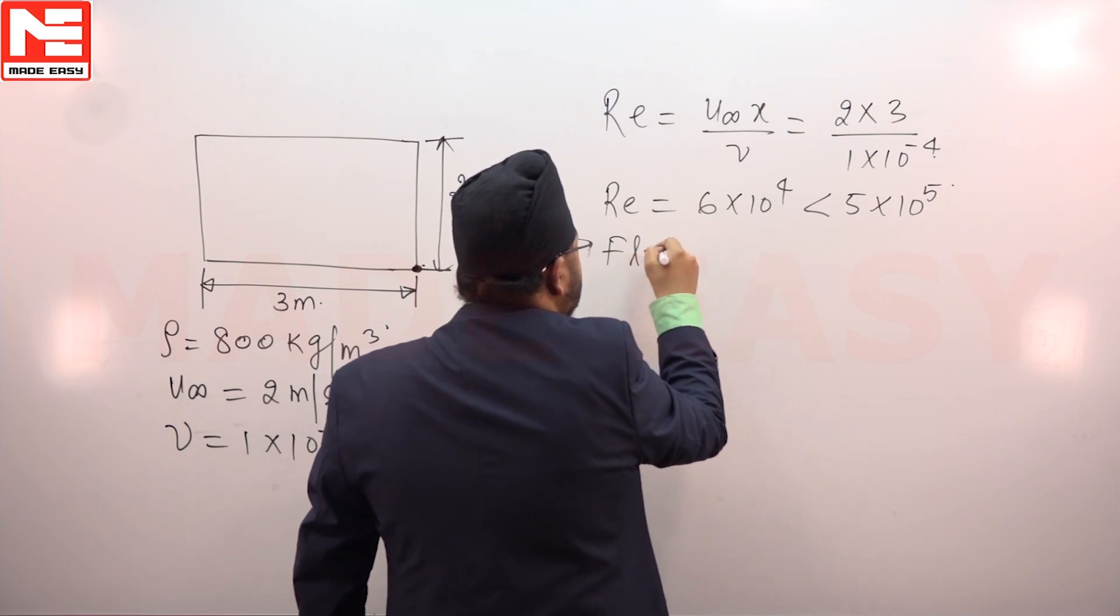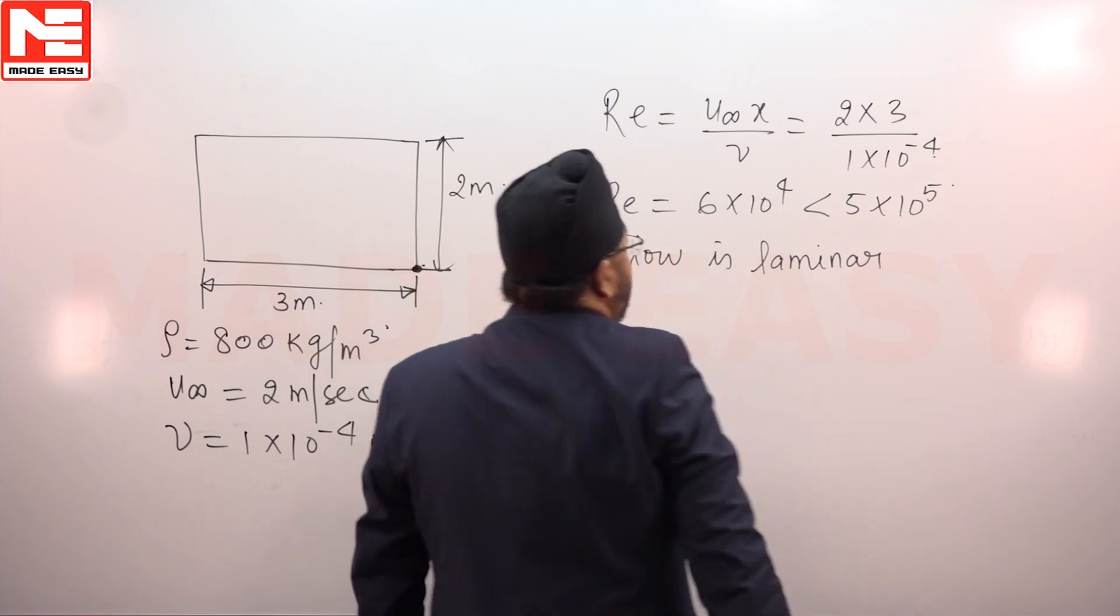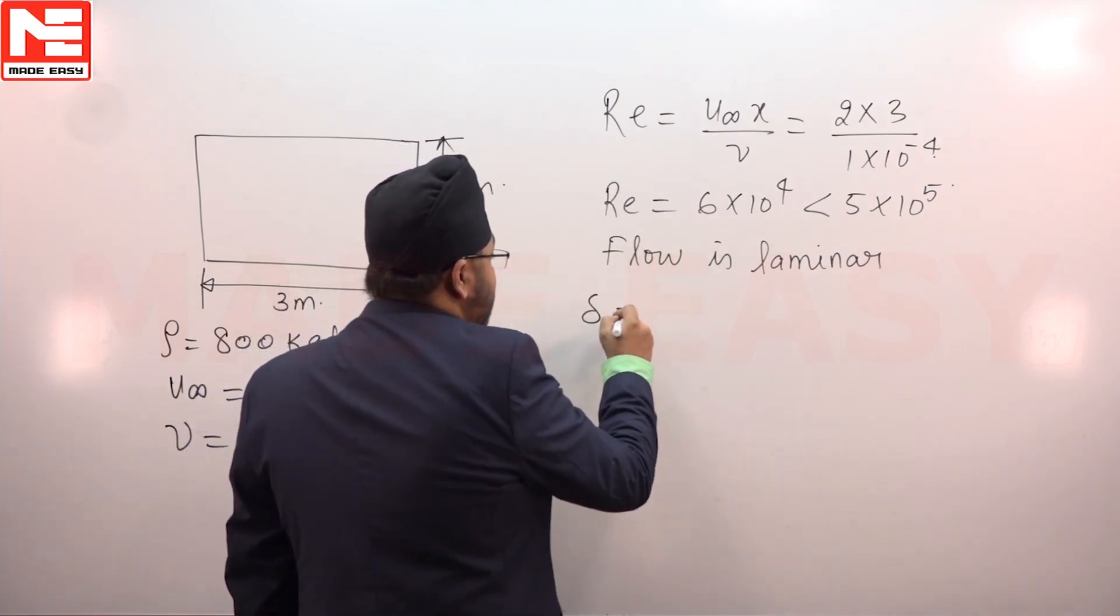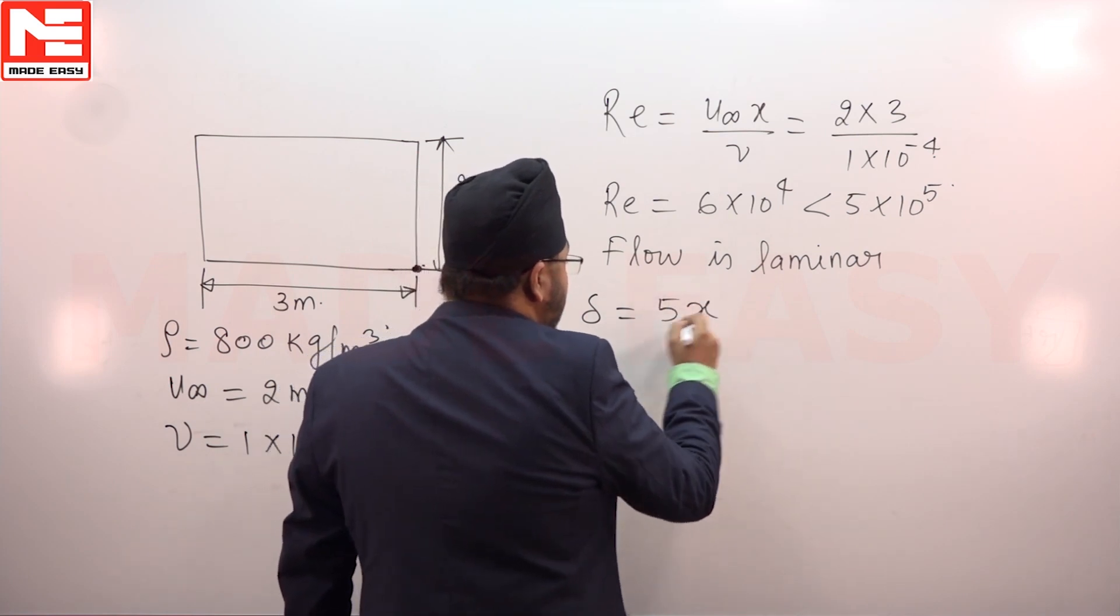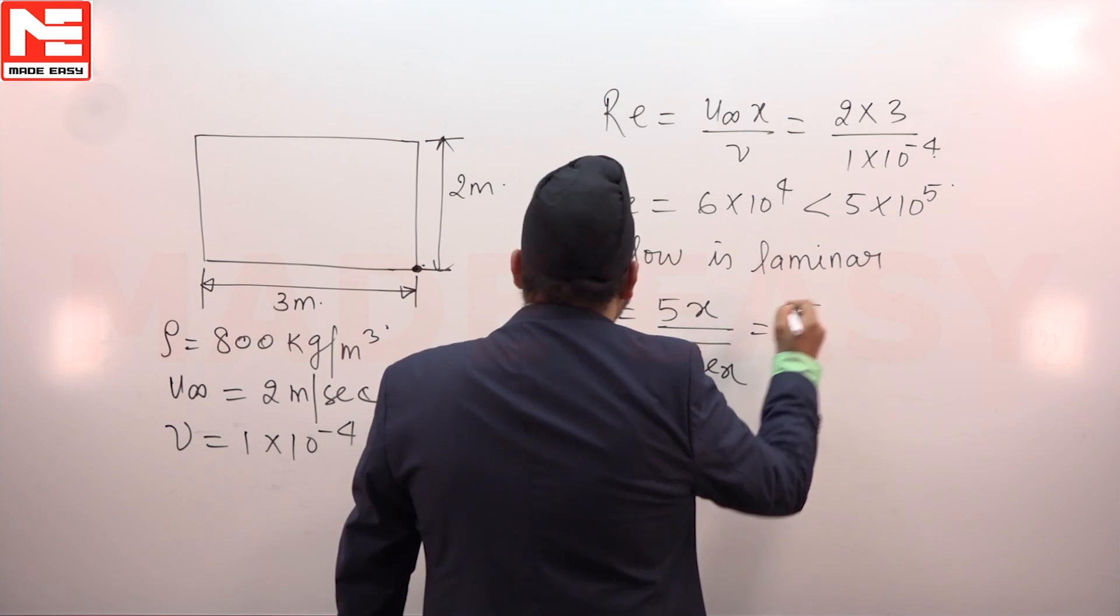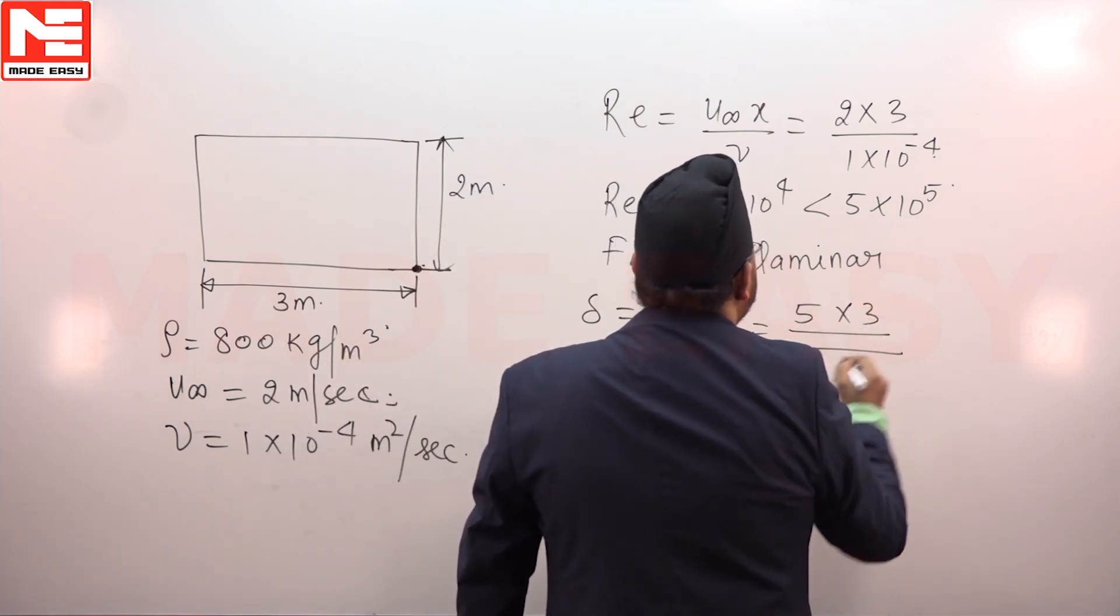If flow is laminar we can use Blasius result which is delta equals to 5x by root Re_x. x is 3 at the trailing edge, Reynolds number is 6×10^4.